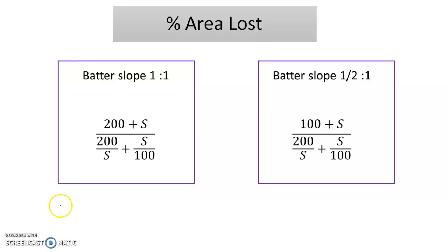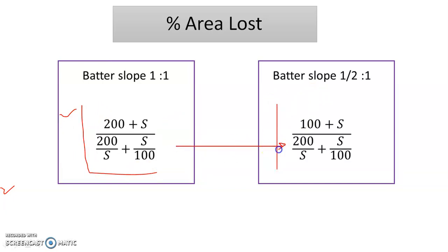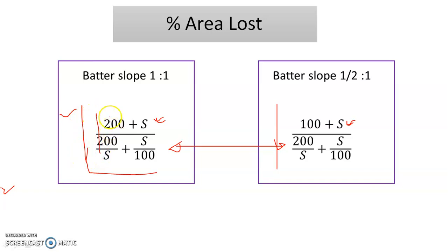One last formula you need to remember: for batter slope, what is the area lost? For 1:1, directly remember this formula. For half:1, directly remember the other. Notice that the denominator is the same for both — only the numerator changes. For half:1 it is (100 + s); for 1:1 it is (200 + s). For half:1 remember 100; for 1:1 remember 200. For half:1 it will become half of 200, that is 100, while the denominator is the same for both.